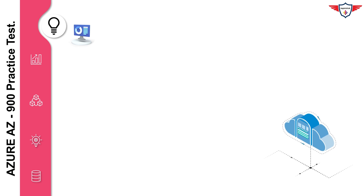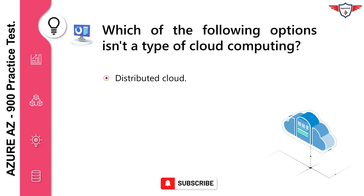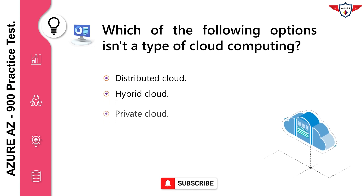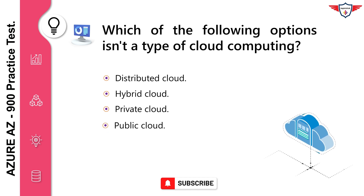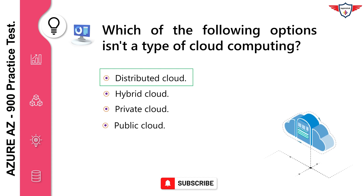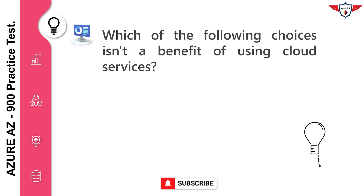Which of the following options isn't a type of cloud computing? Distributed cloud, hybrid cloud, private cloud, public cloud. The correct answer is distributed cloud — a distributed cloud isn't a valid type of cloud computing.